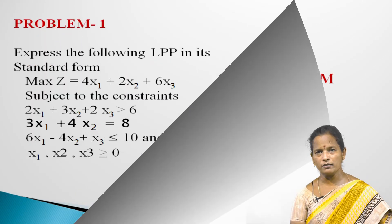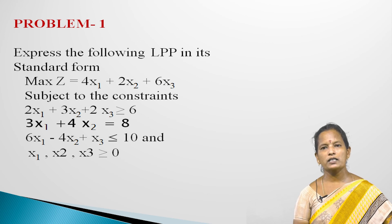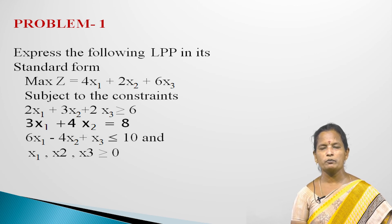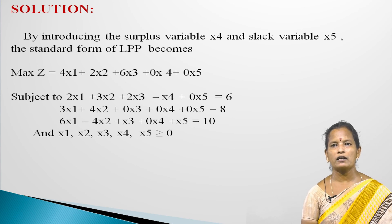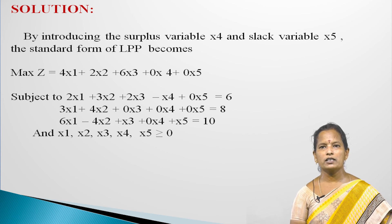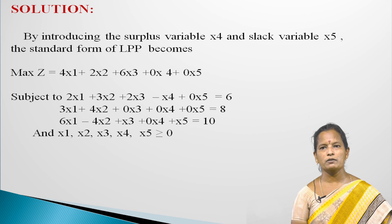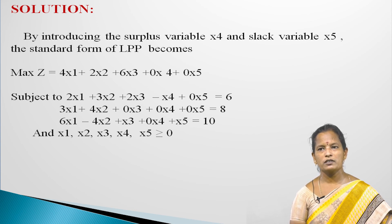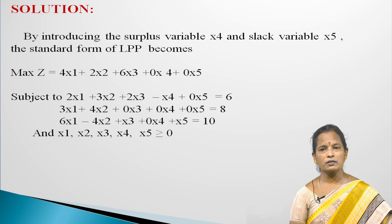Problems based on standard form. Problem 1: Express the following LPP in its standard form. Maximize Z equal to 4x1 plus 2x2 plus 6x3, subject to: 2x1 plus 3x2 plus 2x3 greater than or equal to 6; 3x1 plus 4x2 equal to 8; 6x1 minus 4x2 plus x3 less than or equal to 10; x1, x2, x3 greater than or equal to 0. Solution: Introducing surplus variable x4 and slack variable x5, the standard form becomes: maximize Z equal to 4x1 plus 2x2 plus 6x3 plus 0x4 plus 0x5, subject to: 2x1 plus 3x2 plus 2x3 minus x4 equal to 6; 3x1 plus 4x2 plus x5 equal to 8; 6x1 minus 4x2 plus x3 plus x5 equal to 10; x1, x2, x3, x4, x5 greater than or equal to 0.